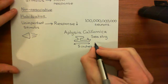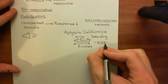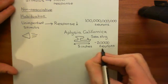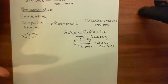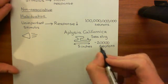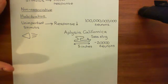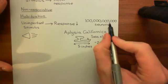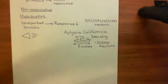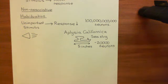Whereas Aplysia californica has a mere 20,000 neurons, and these neurons are massive — much bigger than human neurons — which makes them quite easy to do electrophysiological analysis on. It is plausible that we could actually completely understand the nervous system of an Aplysia californica, whereas it is not plausible at the moment that we can understand the human brain. That is why we have moved from studying humans to studying Aplysia californica — because it's actually doable.